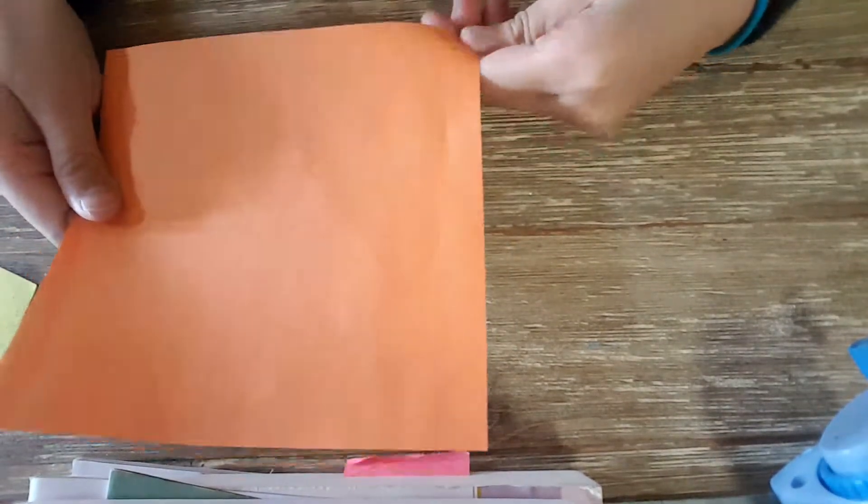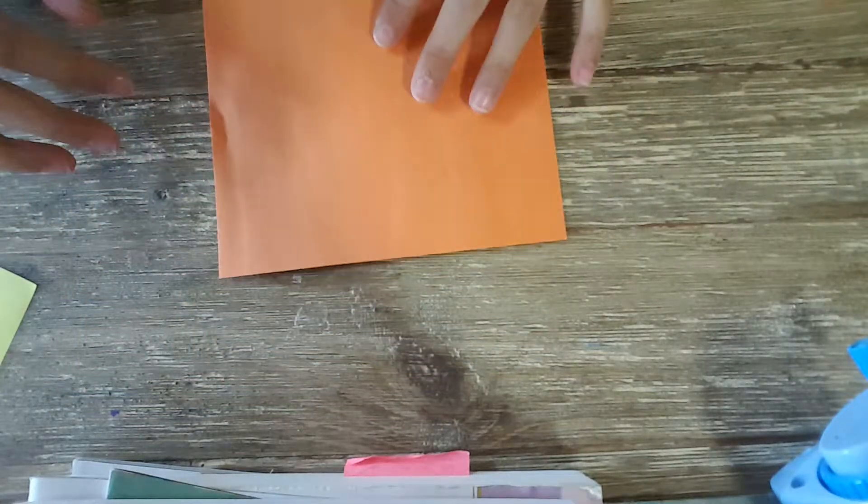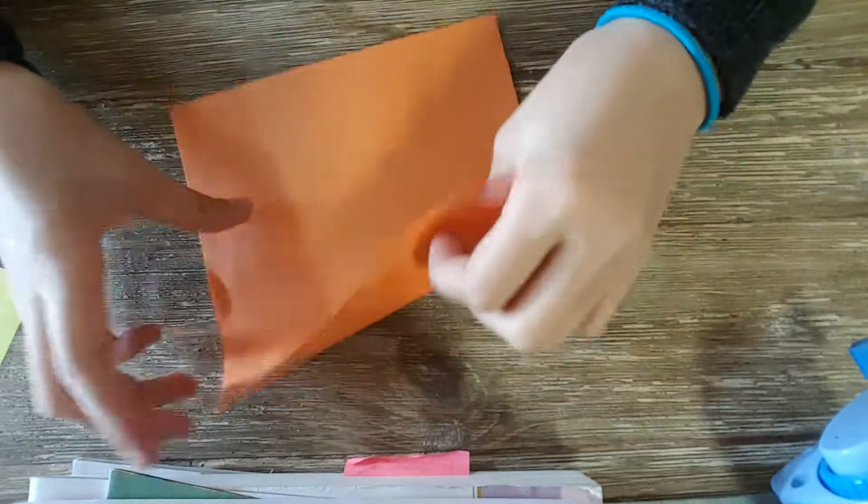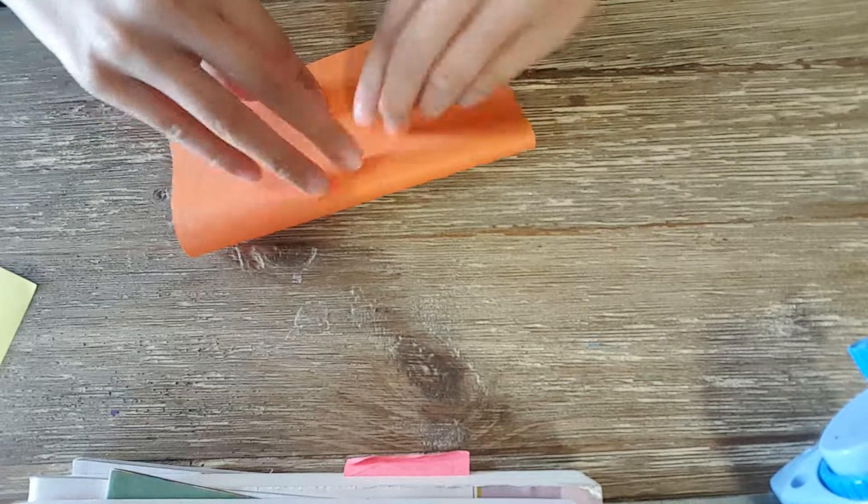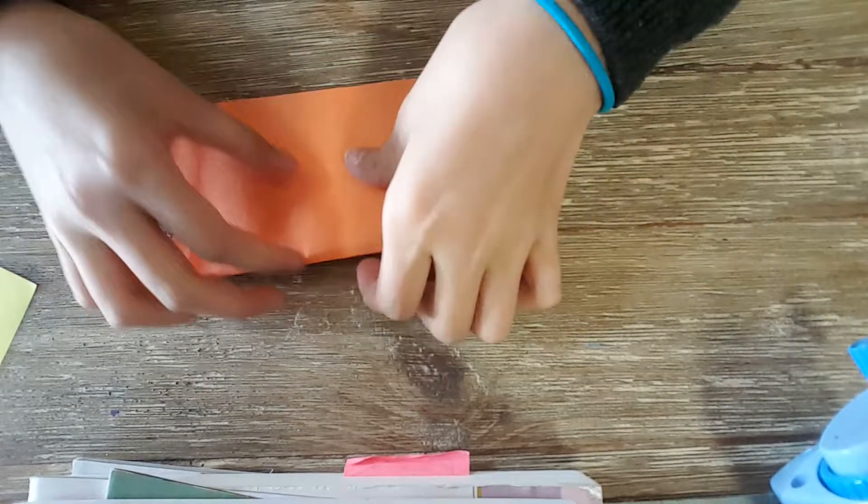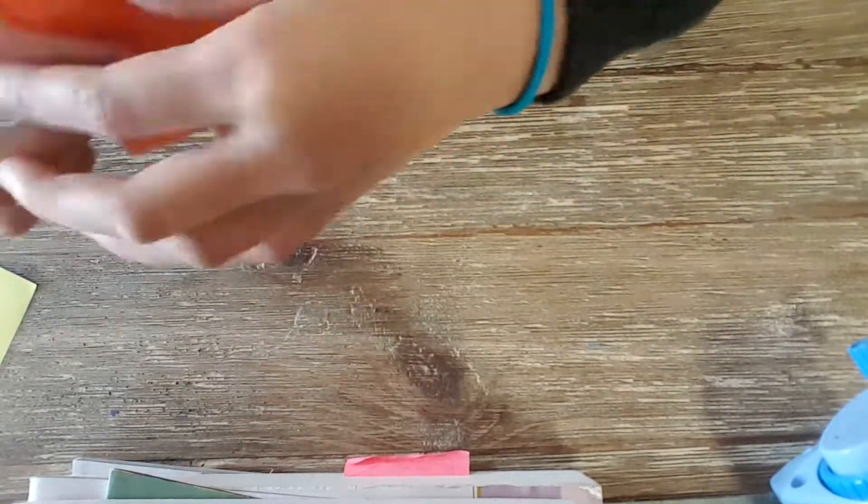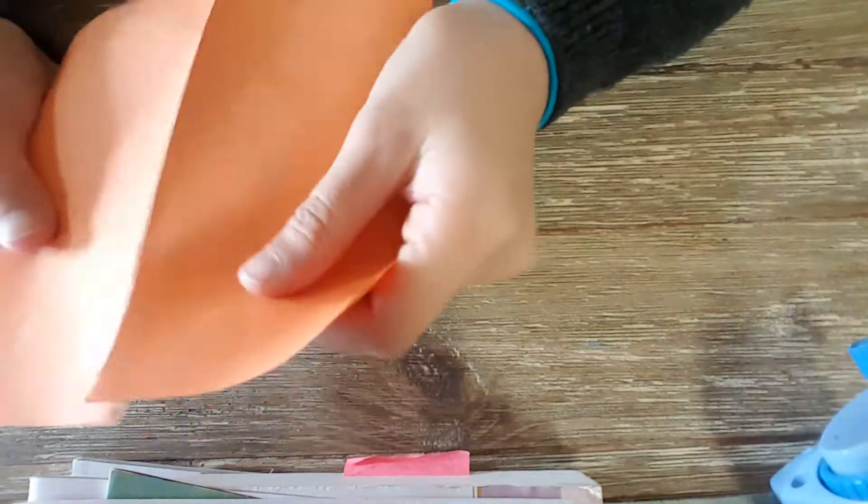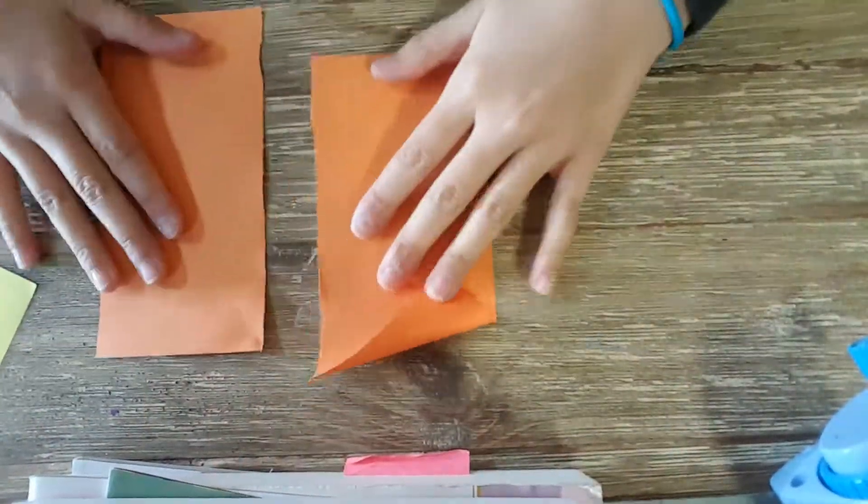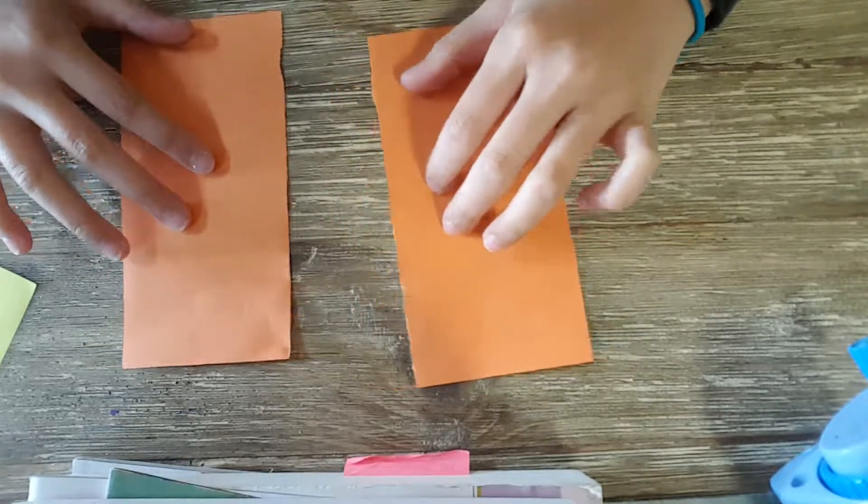First we're going to take a piece of paper, like a square, and you're going to fold it in half. You're going to take a pair of scissors or your hands and cut or rip it on that line. Now you have two pieces of paper, as you can see.